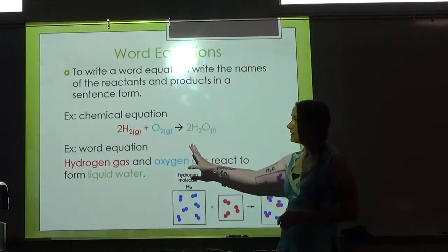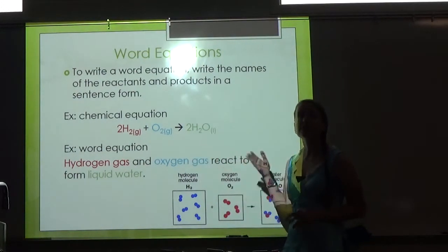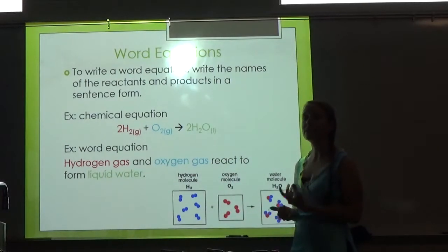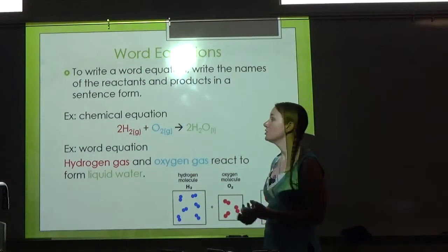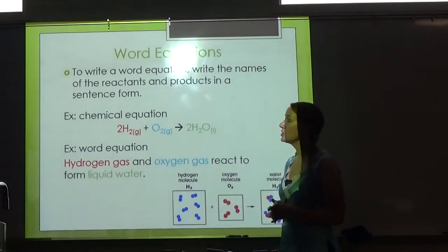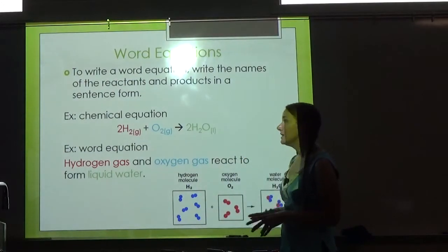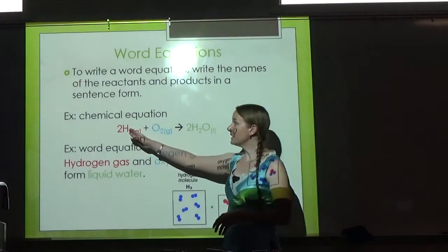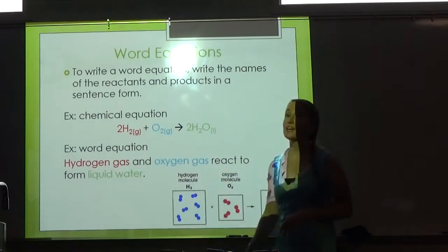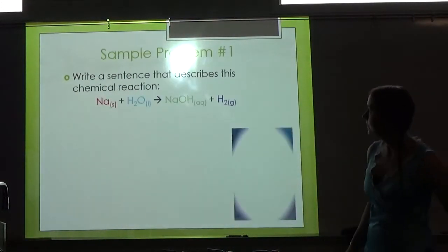The hardest part is giving things the correct name. We learned naming back in Chapter 9, so if you struggle with naming, you may need to go back and watch the Chapter 9 videos again. This one was super easy because I just used two elements and water, but we'll look at some more difficult ones in the next couple of slides.